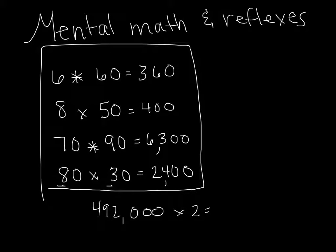What numbers do we really need to multiply together here to find our product? Right, it's the same as doing 492 times 2. And then you just count up how many zeros. So keep in mind this shortcut whenever you are doing multiplication.